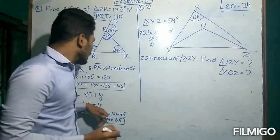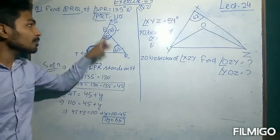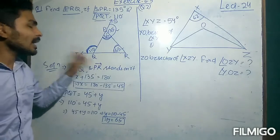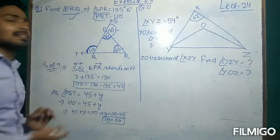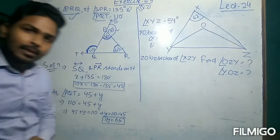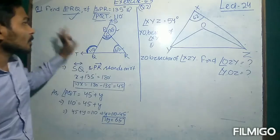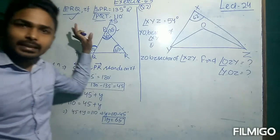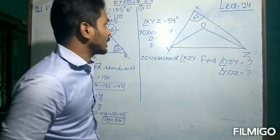So in this way you can find the value of angle PRQ. We find both X and Y: X is 45 degrees and Y is 65 degrees. Question number one is now clear. Coming to the second question.